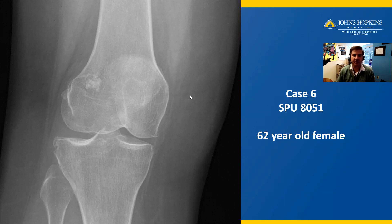Case number six is from a 62-year-old female. Here we have a plain film x-ray showing an abnormality in the distal femur metaphysis. This abnormality has a sclerotic border — you can draw a line all the way around the edges of this mass. The matrix is predominantly lytic, meaning dark, darker than the surrounding bone.